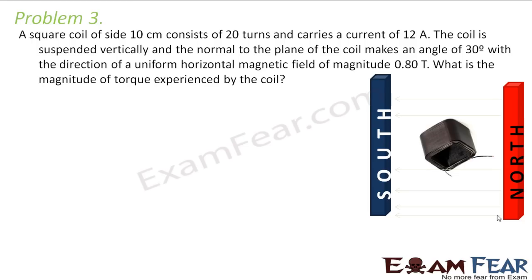The third problem says that a square coil of side 10 centimeters consists of 20 turns and carries a current of 12 amperes. The coil is suspended vertically and the normal to the plane of the coil makes an angle of 30 degrees with the direction of a uniform horizontal magnetic field. We need to find the magnitude of the torque.